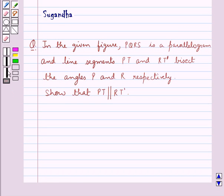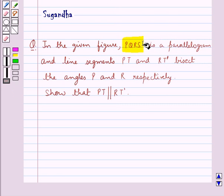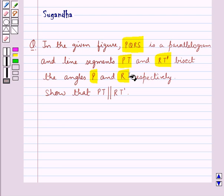Hello and welcome to the session. In this session we discuss the following question: In the given figure, PQRS is a parallelogram and the line segments PT and RT' bisect the angles P and R respectively. Show that PT is parallel to RT'.